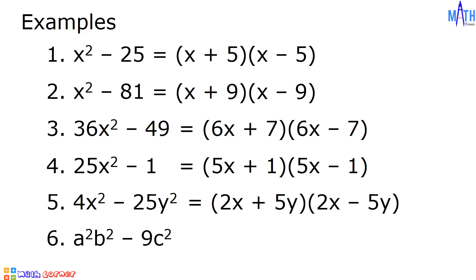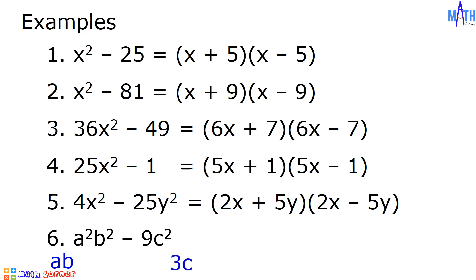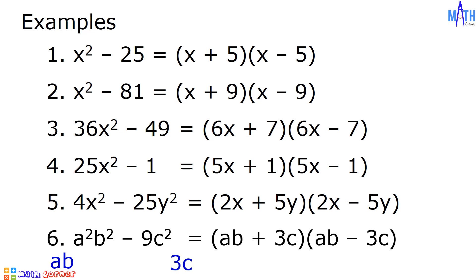Last example: Let us factor a squared b squared minus 9c squared. Square root of a squared b squared is equal to ab. Square root of 9c squared is equal to 3c. And we have ab plus 3c times ab minus 3c.